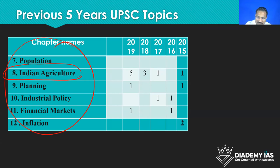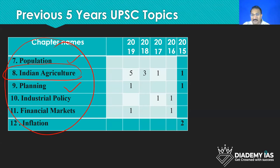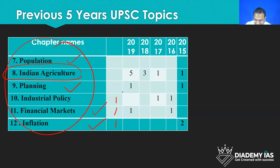For population, there are very few questions. Planning — they have been asking questions from the planning sector since the last two years. Financial markets — maybe one question each. Two questions from some areas and zero from others. This was the trend in 2020.